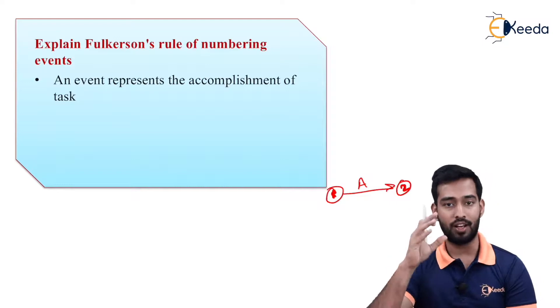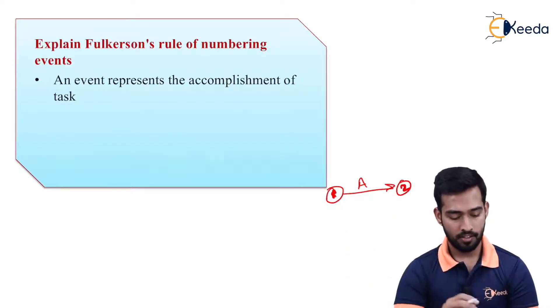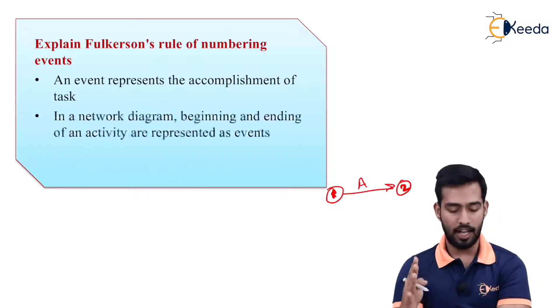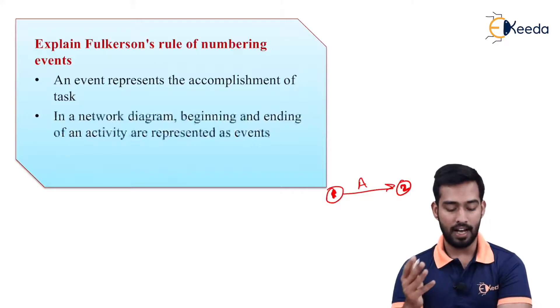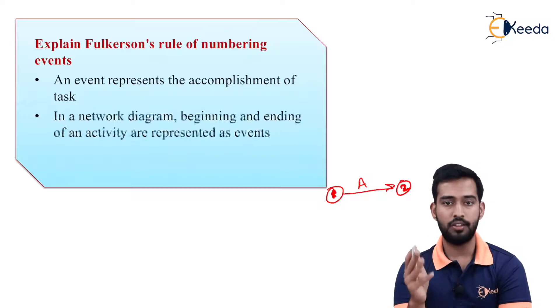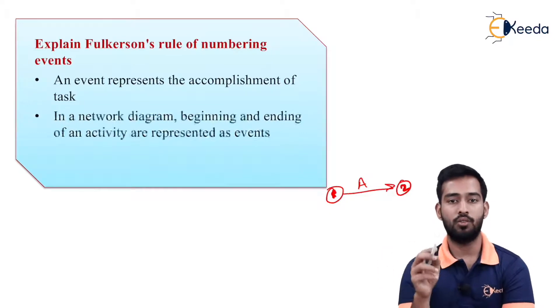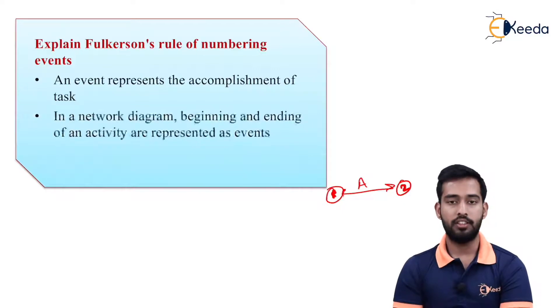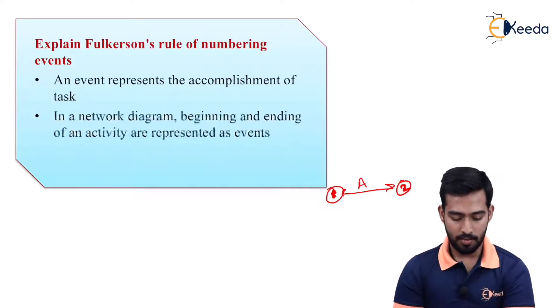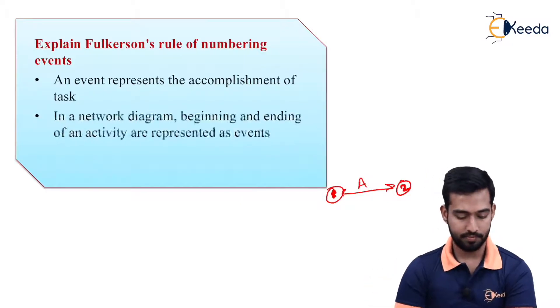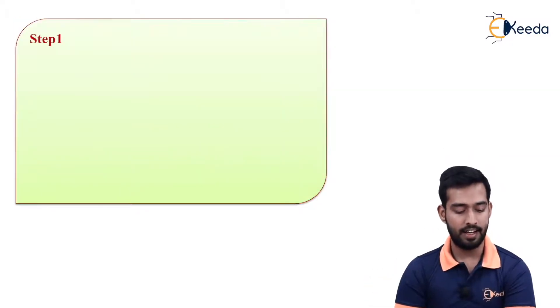How will you do this numbering? That we will see over here. In a network diagram, beginning and ending of an activity are represented as events. As I have discussed already, your number one and two nodes are known as events, and your arrow is your activity. So the activity represents the events, starting event and end event.